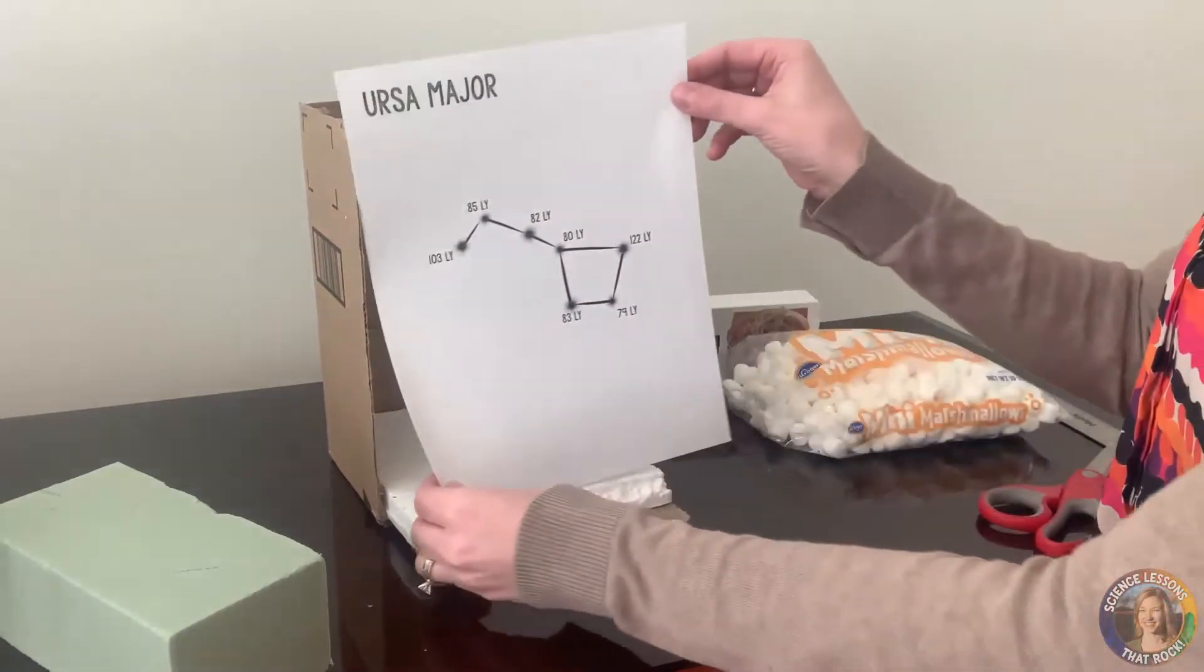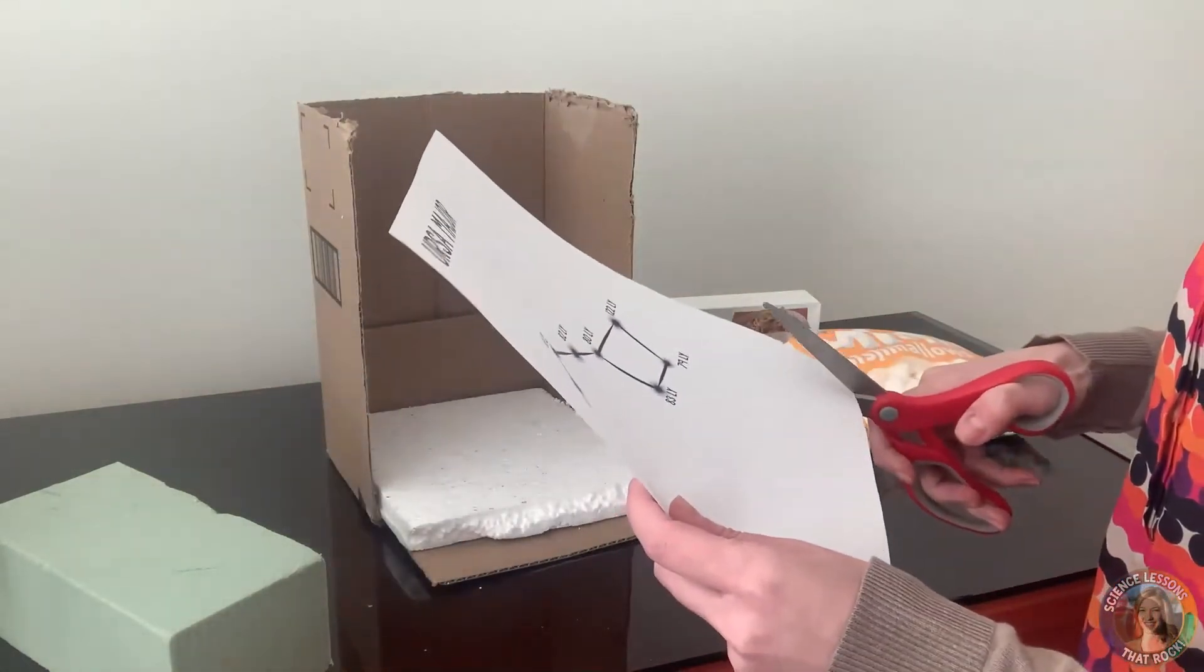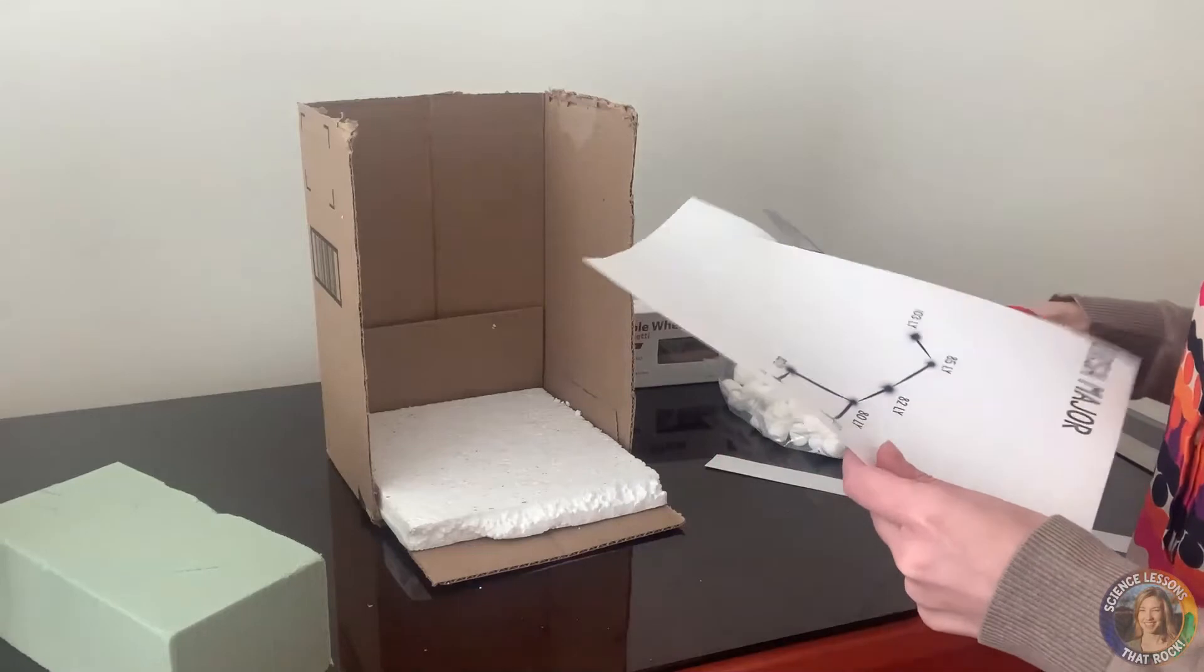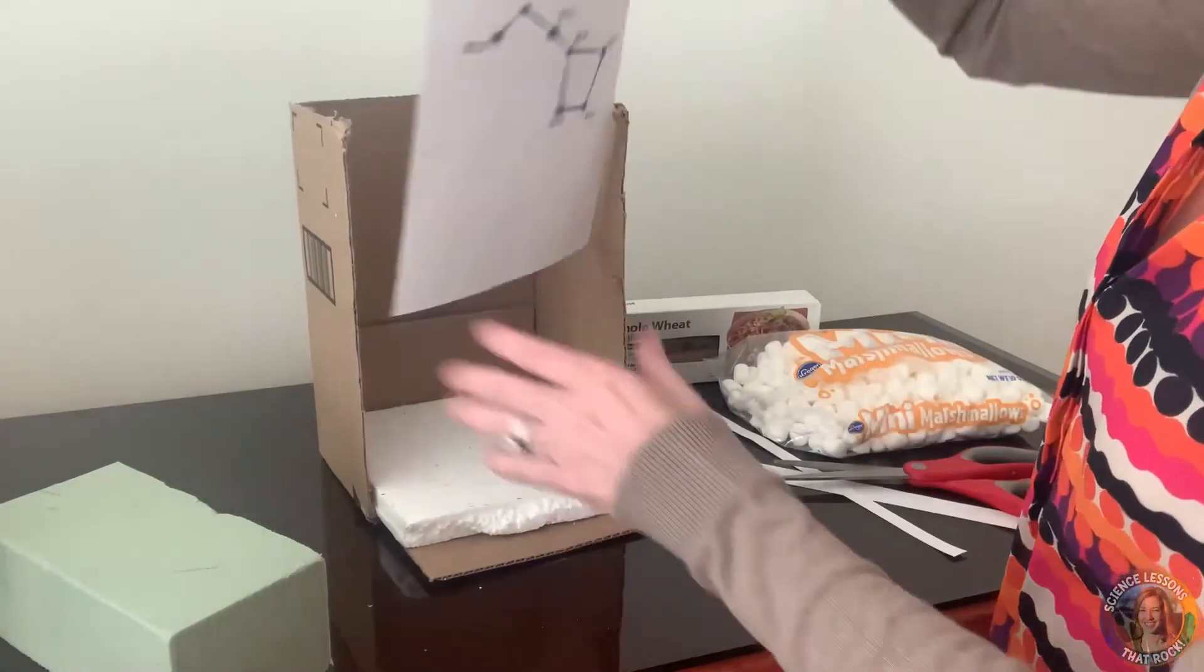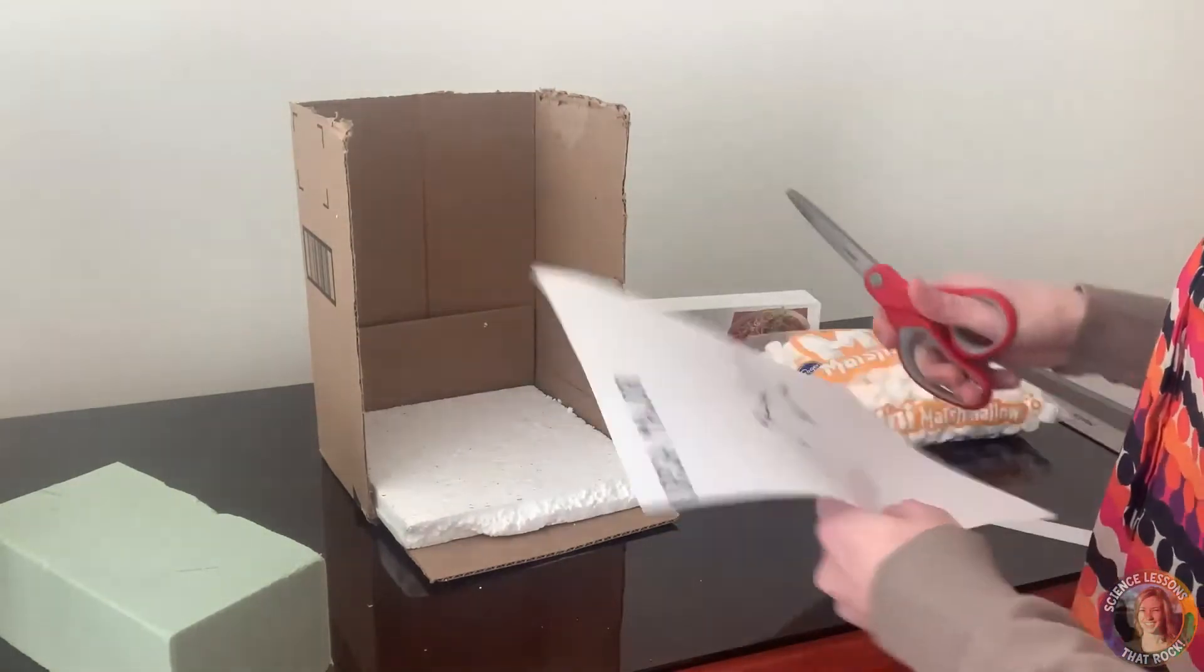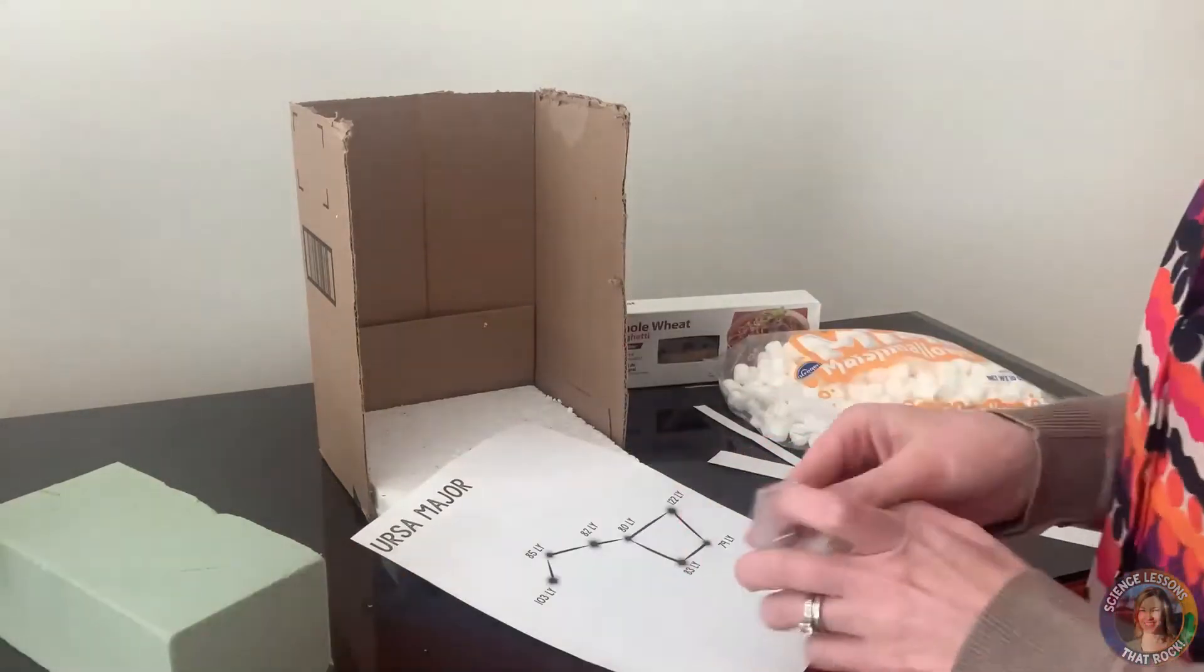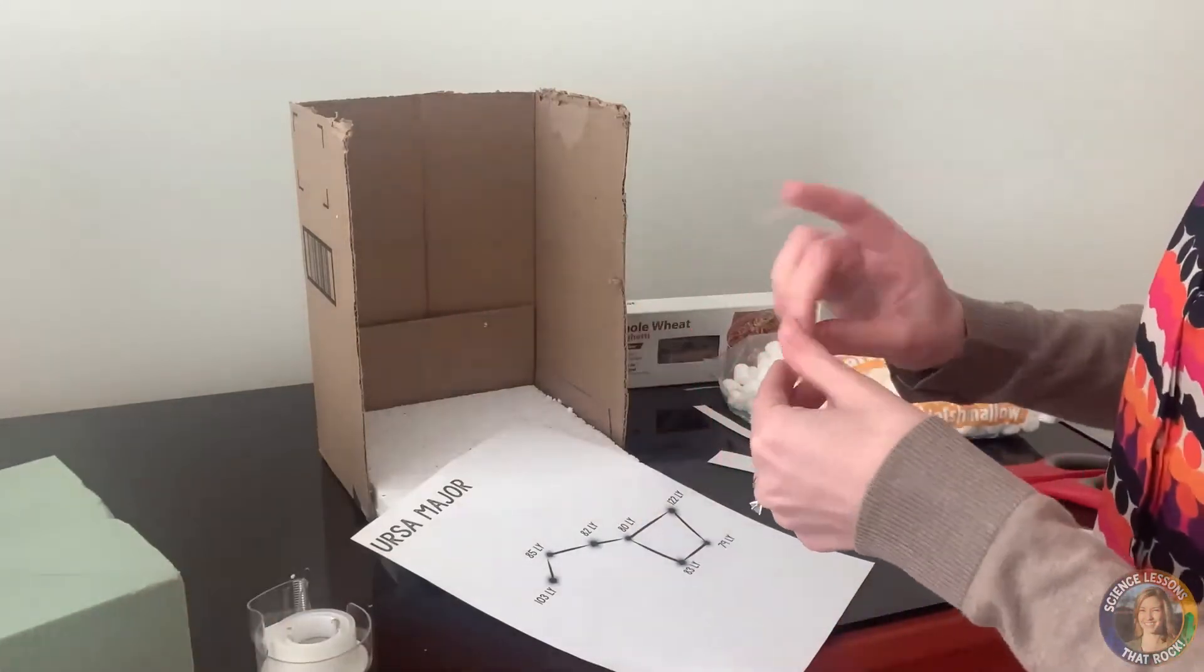So the first thing I'm going to do is I'm going to cut this down just so it fits in the back of the box. And then I'm going to cut a little off the bottom too. And I'm going to put a little bit of tape rolls on the back just so I can stick it to the back of the box.